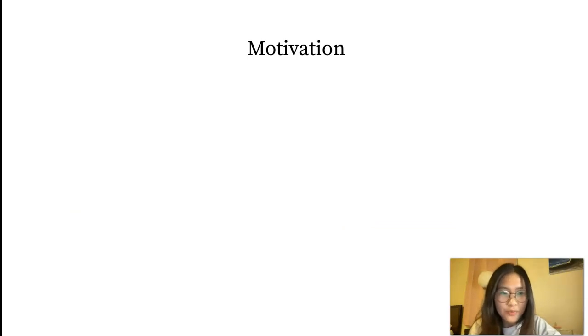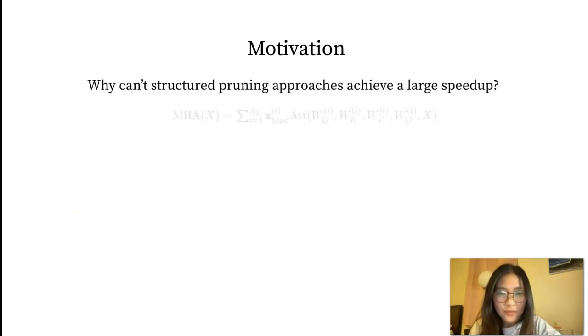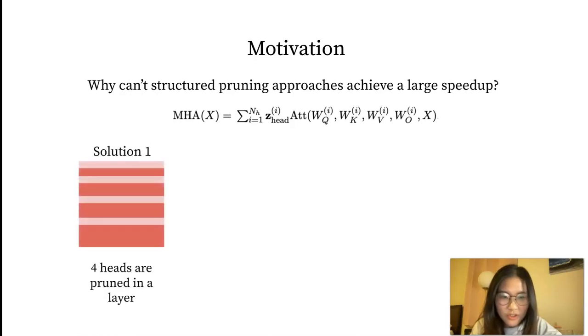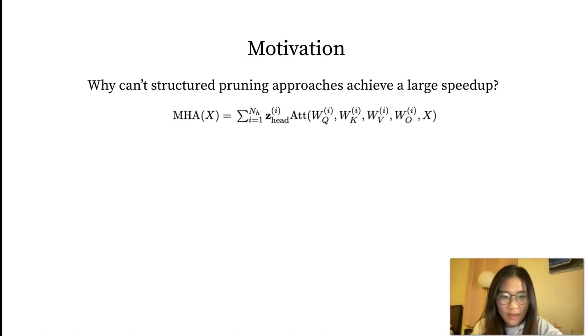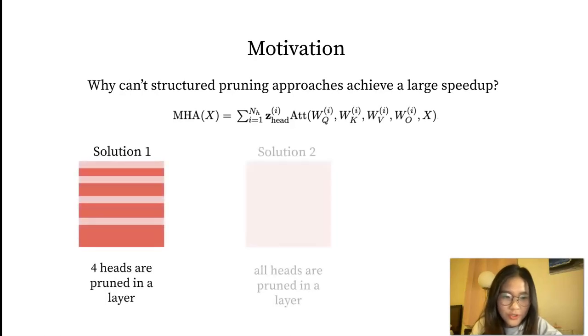Why can't structure pruning approaches achieve a large speedup? Take removing heads for example. A common practice to model the pruning decision of a head is to place a head mask inside the multi-head attention function and jointly learn the head mask along with the model parameters. It should entail the solution to prune four heads from a layer and also the solution to prune all heads of a layer.